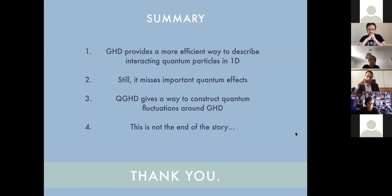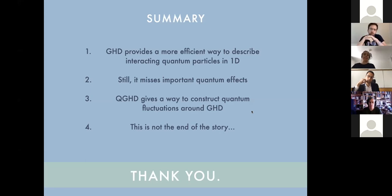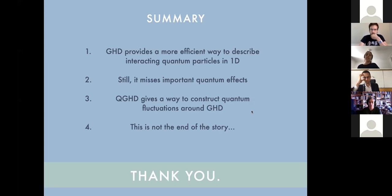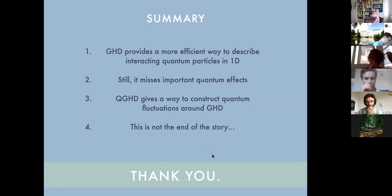With that, I would like to conclude with this short summary. GHD indeed provides a more efficient way to describe interacting quantum particles in 1D, but still it misses important quantum effects. I hope I convinced you that quantum GHD gives indeed a way to construct quantum fluctuations around GHD. Let me emphasize once again that this is not the end of the story, meaning that there are farther contributions one can take into account by considering corrections to the GHD equation for the evolution itself. Thank you for your attention.